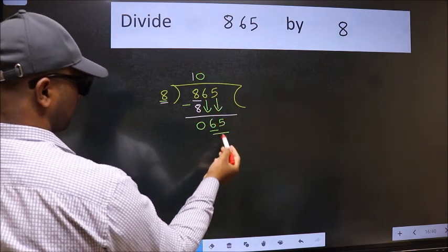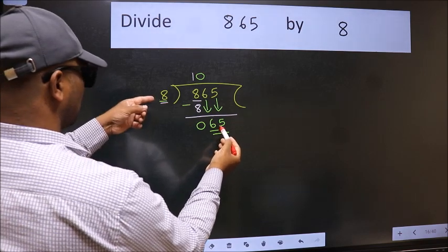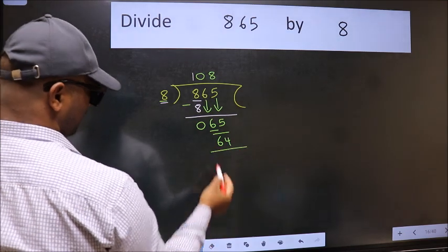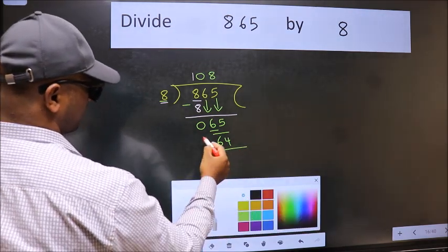Now 65. A number close to 65 in the 8 table is 8 times 8, which is 64. Now we should subtract. We get